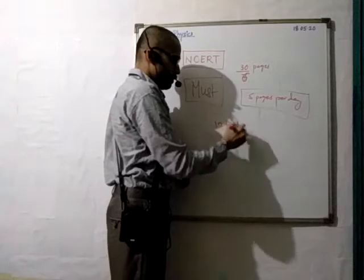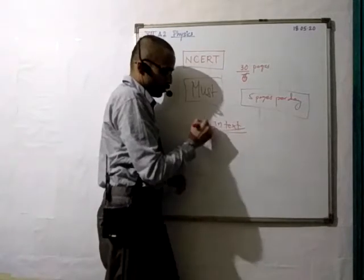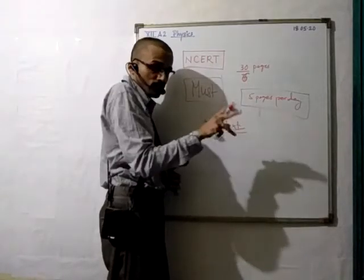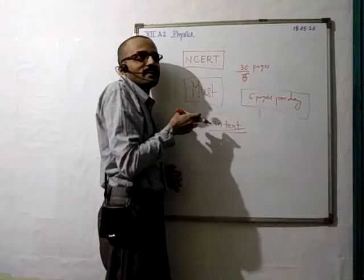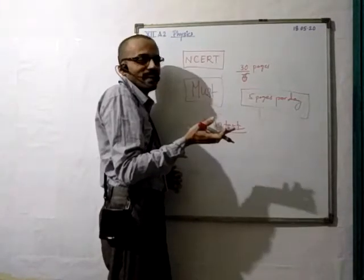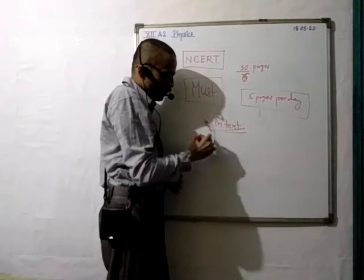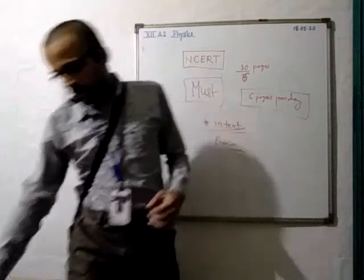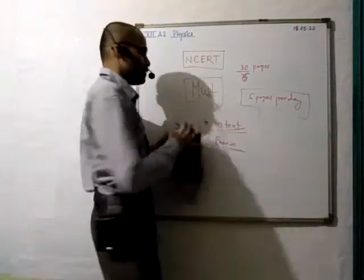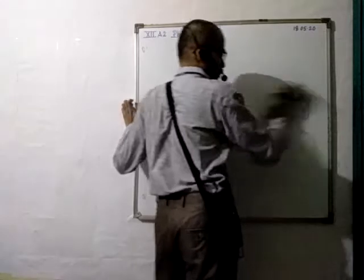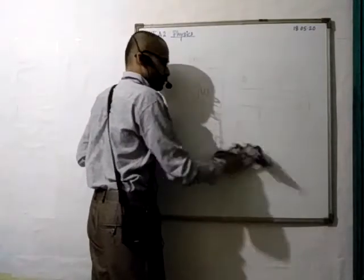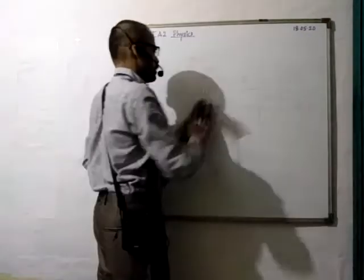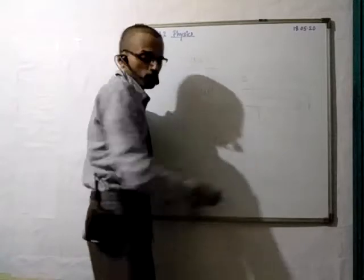After reading, do the in-text problems — as I told in the previous video. In-text problems come directly in MCQs; they may change it slightly. So don't be in a situation where you say 'this was in the in-text and I didn't do it.' Do the in-text and also do the exercises. Once you do that, you will get confidence — 'I can do this.' Once confidence comes, nobody can stop you. You can go like a bullet.